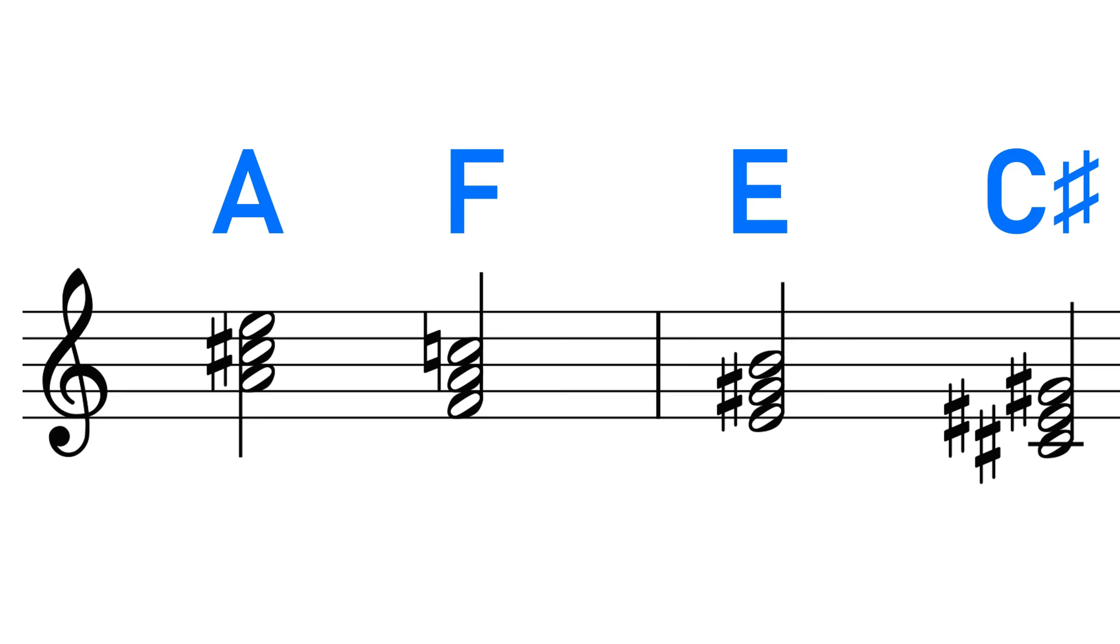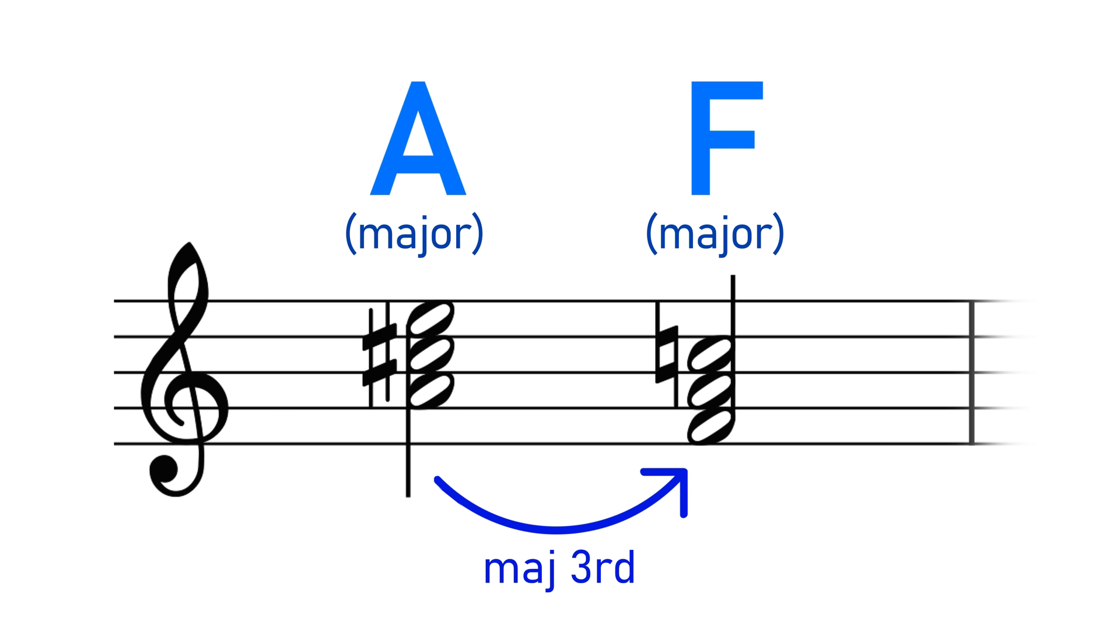Chromatic mediants are chords that are both the same quality, i.e. major or minor, and also either a minor or major third away from each other. And what you get when you have two chords that are a third away from each other and the same quality are two chords that aren't really technically related in the traditional sense, but they share one note in common, which sort of allows them to work together despite the fact that they're not really suited to each other.